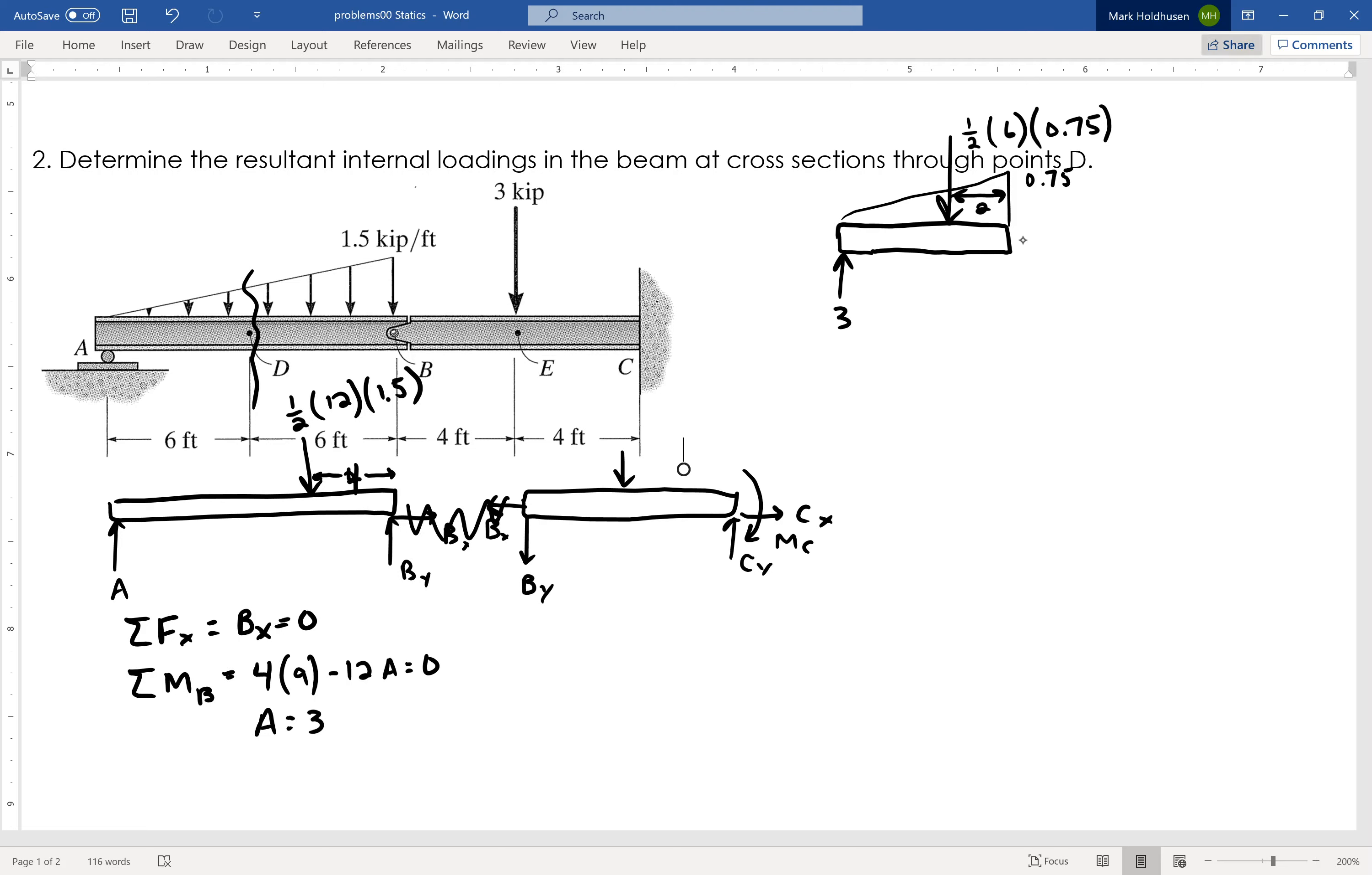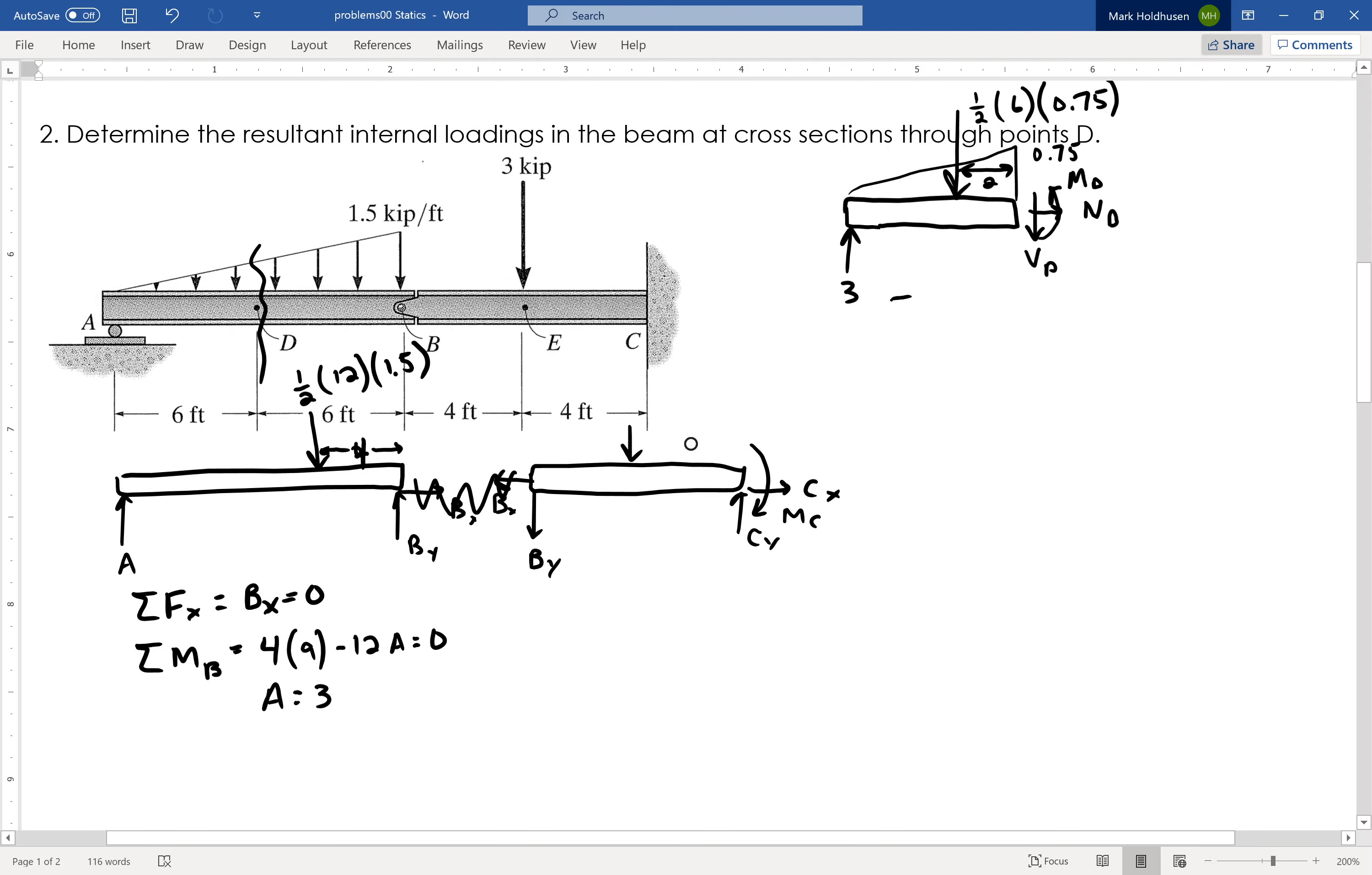Okay, and then at point D, I have the normal force at D, the shear force at D, and the bending moment at D. And what I can do here is I can sum the forces in X, Y, and then the moment to find each one of these. So I can start by summing the forces in the X direction. And basically, I'm going to have the normal force at D equals 0. So that is my first answer. There is no normal force at D.